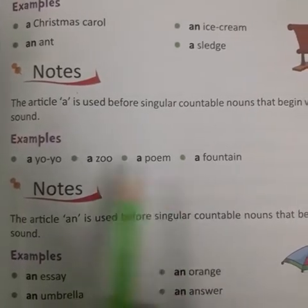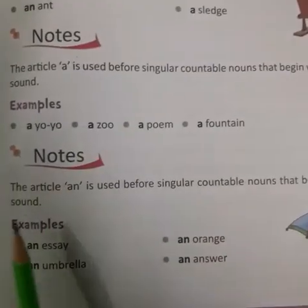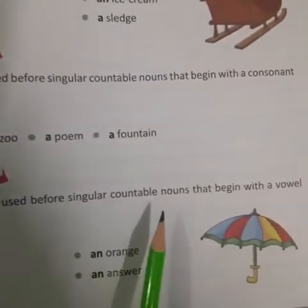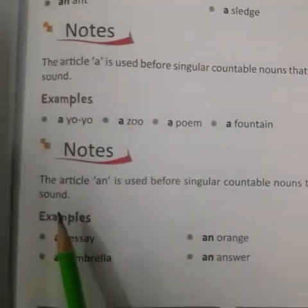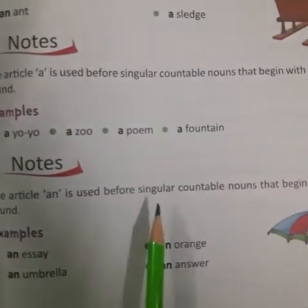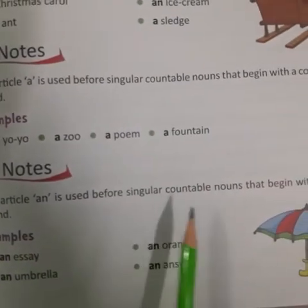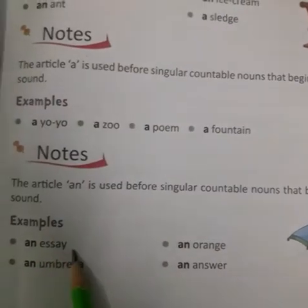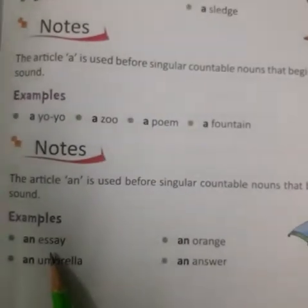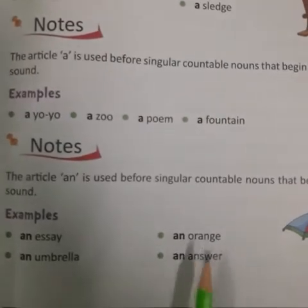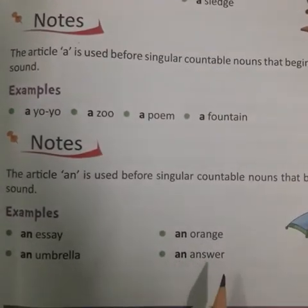The article 'an' is used before singular countable nouns that begin with a vowel sound. Aur 'an' ka use hum un countable nouns ke saath karte hain jo vowel sound se start hote hain. For example: an essay, an umbrella, an orange, an answer.